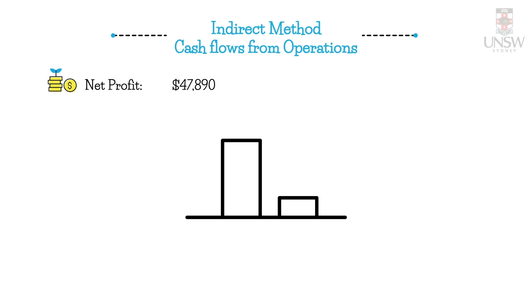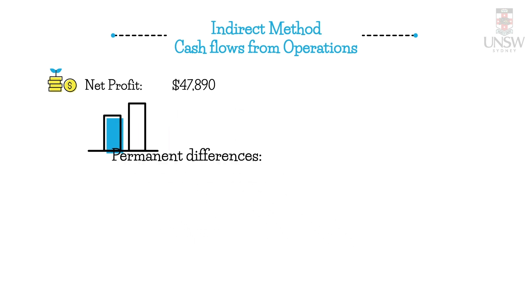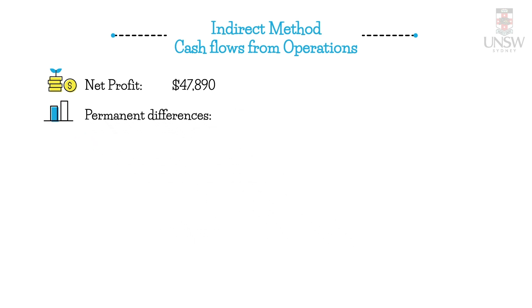Next, the section we're going to do is permanent differences. These are differences that will never result in a cash flow — they are essentially accrual adjustments. The types of permanent differences include things like depreciation and gains and losses on the sale of non-current assets. We need to first calculate how much depreciation we had for the period.